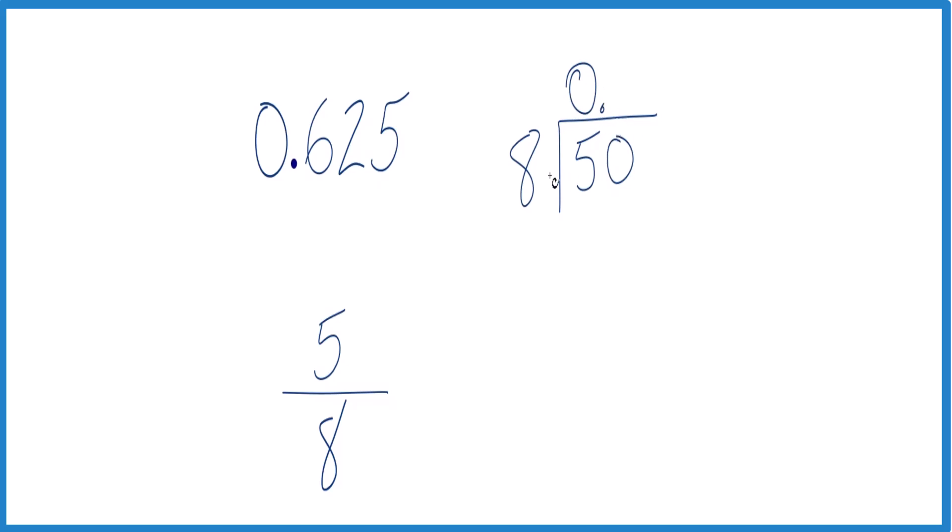So now we could say 6 times 8, that's 48. We subtract and we get 2. 8 doesn't go into 2. Call it 20 and then we move over 1.